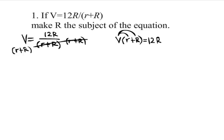You multiply V by both r's and get Vr plus VR equals 12R. Again, do not confuse the capital R with the lowercase one.